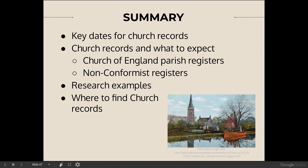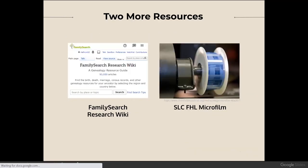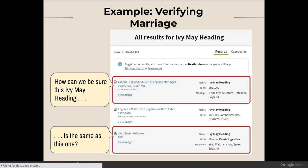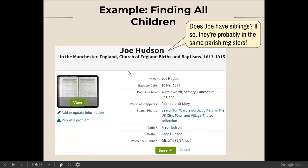We have a question from Delir: how do we edit indexed records on Ancestry — for example names, dates, etc.? That is a great question because you will find mistakes from time to time. On the Joe Hudson christening record screenshot, you can click 'add or update information' and it gives you a set of fields — name, date, residence, and so on. For each one, it allows you to specify what they call alternate information. That information is moderated — somebody at Ancestry checks it to make sure it looks reasonable — and after it's approved, it will show up in brackets underneath the person's name. That's how you can correct indexes on Ancestry.com.